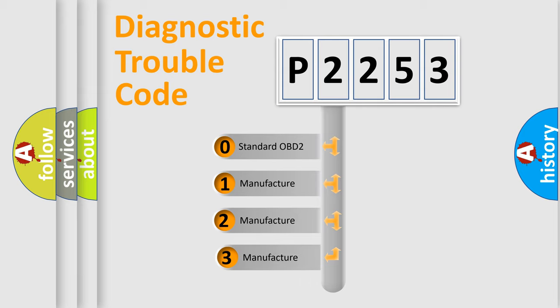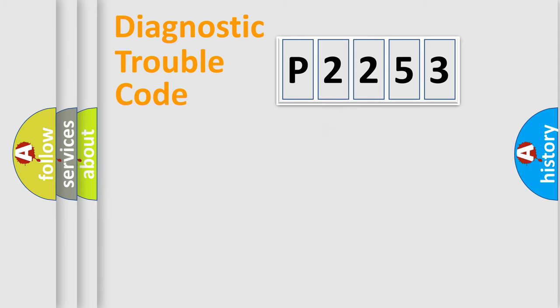If the second character is expressed as zero, it is a standardized error. In the case of numbers 1, 2, or 3, it is a manufacturer-specific expression of the car-specific error.